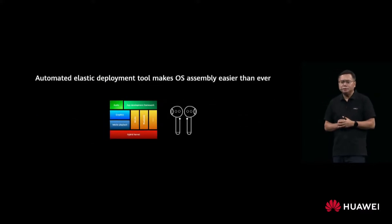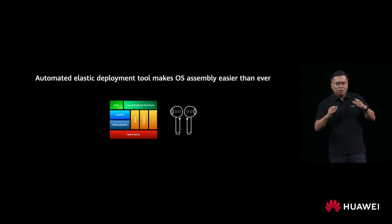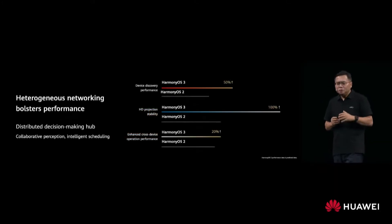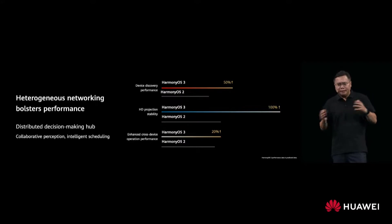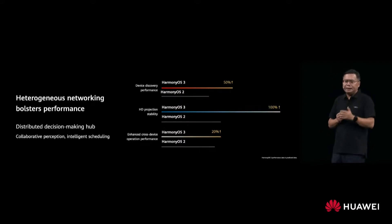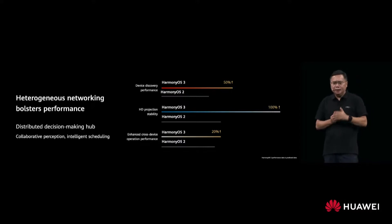Additionally, HarmonyOS 3 developer preview includes performance improvements over HarmonyOS 2.0: 50% improvements in terms of device discovery performance, 100% improvements in terms of HD production stability, and 20% improvements in terms of enhanced cross-device operation performance.